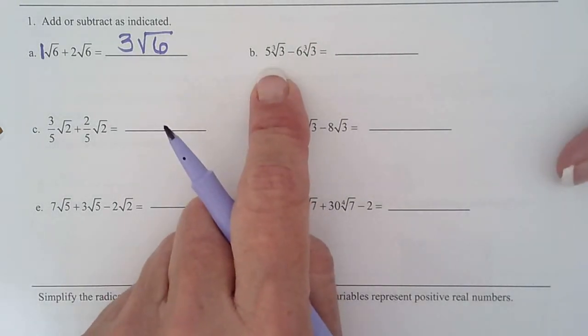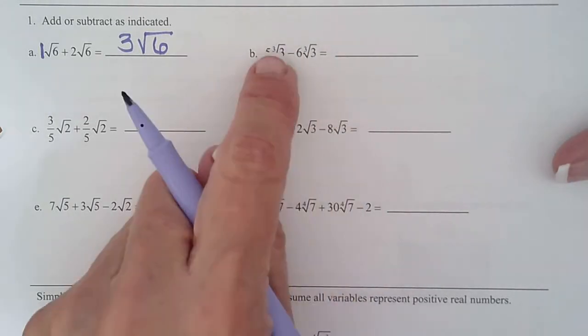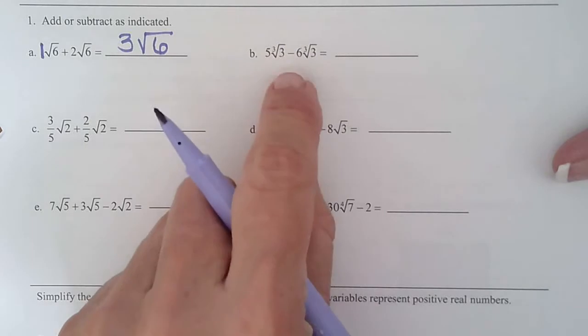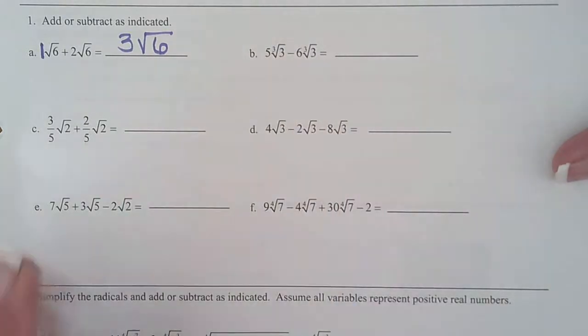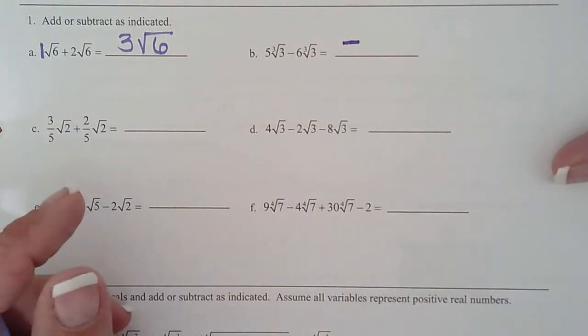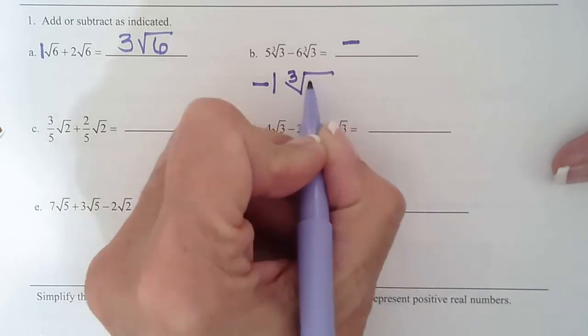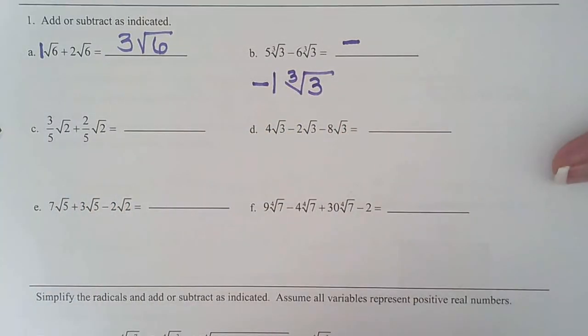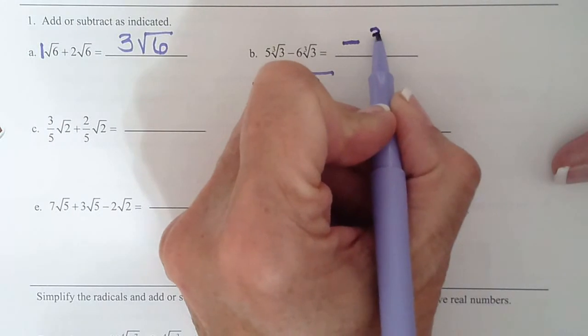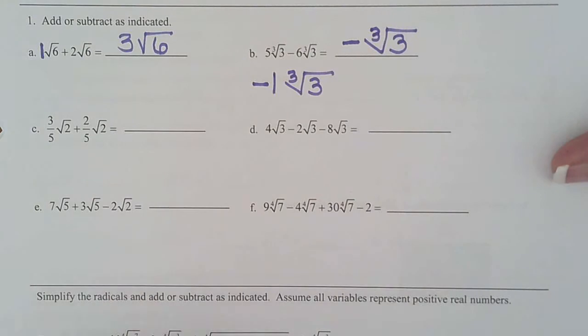For b, 5 cube root 3 minus 6 cube root 3, they have the same index. They have the same radicand. Therefore, we can subtract 5 minus 6 is negative 1. But remember, generally we don't write the 1. So you could on the first step, negative 1 cube root 3. And then when you go to write your final answer, just write negative cube root 3. So just like x's, we generally don't put that 1 out in front.